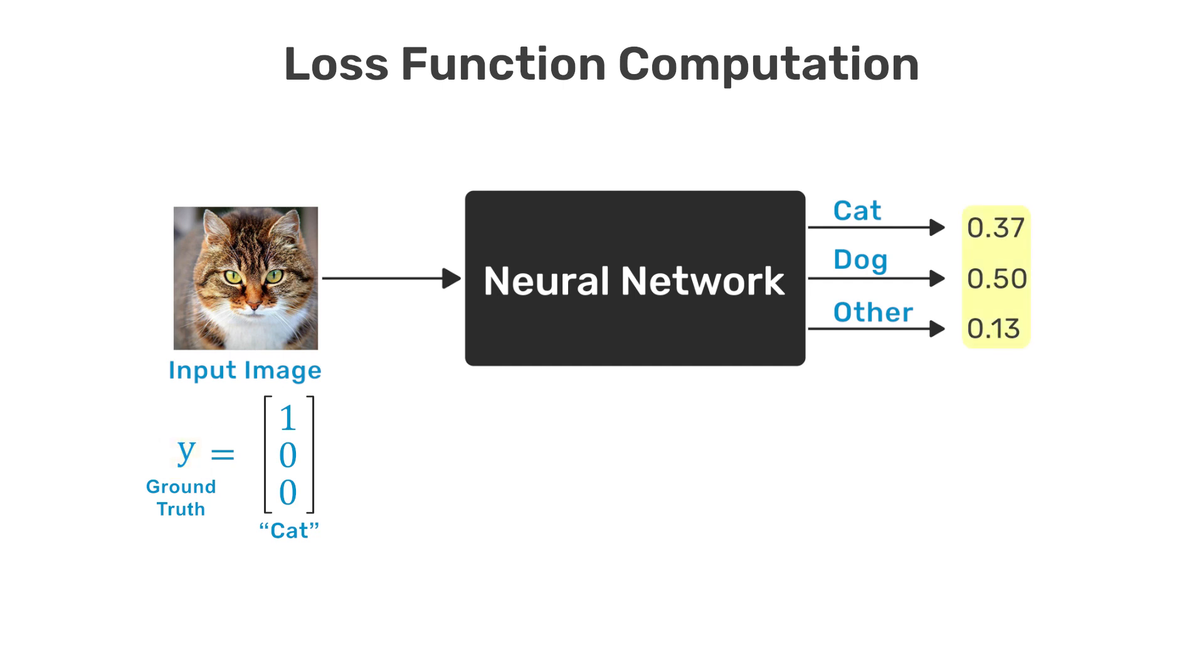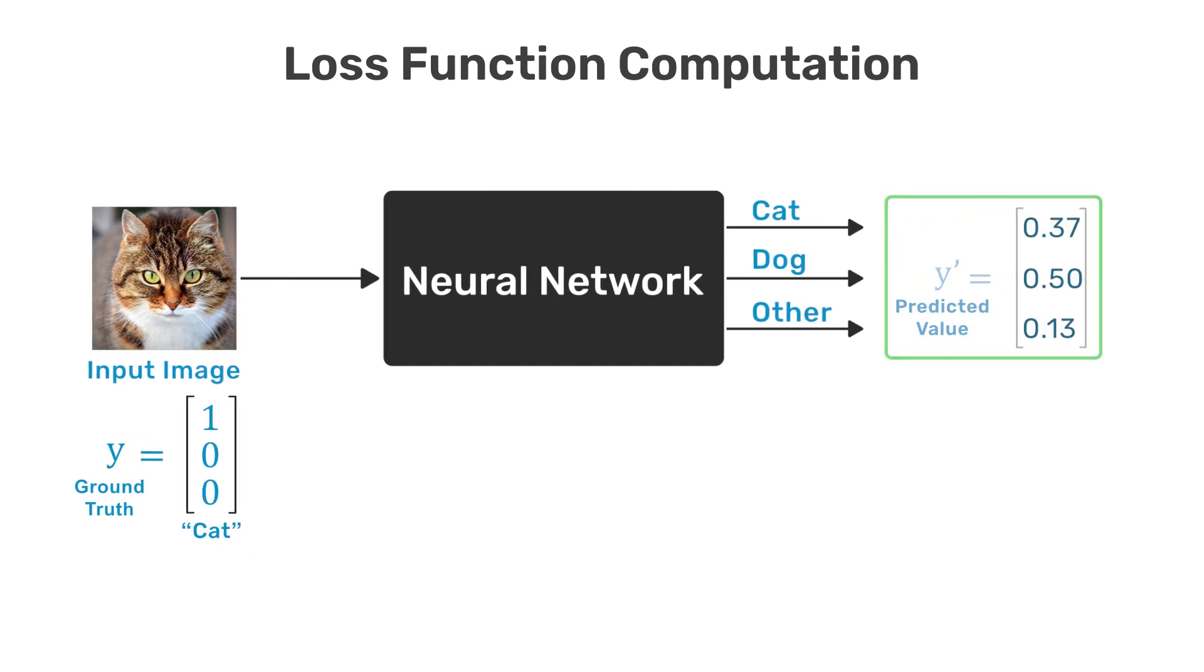Notice the output from the network consists of three floating point numbers between 0 and 1. The output vector from the network represents a prediction and the vector is usually called y prime or y hat to designate it as an estimate of the ground truth. Here we show an example where the network produces an output vector with entries 0.37, 0.50 and 0.13.